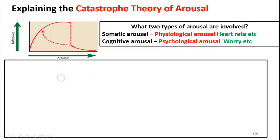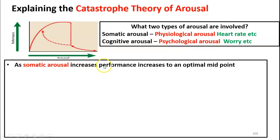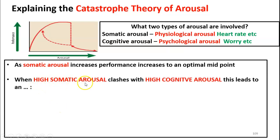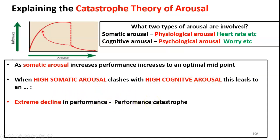The catastrophe theory says that as somatic arousal increases, performance increases to an optimal midpoint — very similar to the inverted U. The key difference is that if high somatic arousal clashes with high cognitive arousal, this will lead to an extreme decline in performance, which is also known as a performance catastrophe. So somatic arousal increases performance up to an optimal midpoint, but when high somatic arousal coincides with high cognitive arousal, performance suffers an extreme decline — a catastrophe.